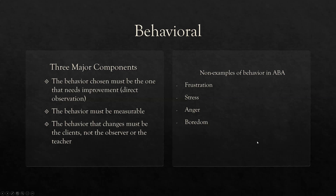Non-examples of the behavioral dimension involve mentalisms and private events that aren't observable or measurable. Common ones are frustration, stress, anger, boredom. 'He was just angry, so he threw the chair.' 'He's bored in class, so that's why he doesn't learn well.' We can't observe or measure those things — they don't fit into the behavioral component. This is probably the most obvious and easy dimension.